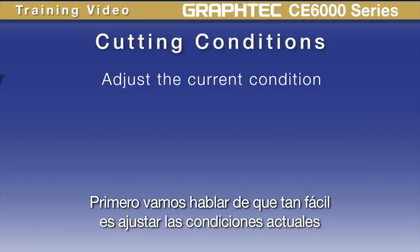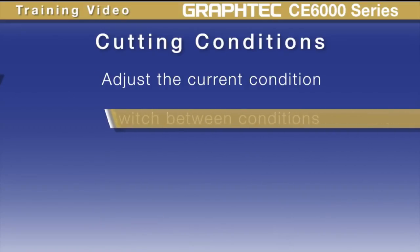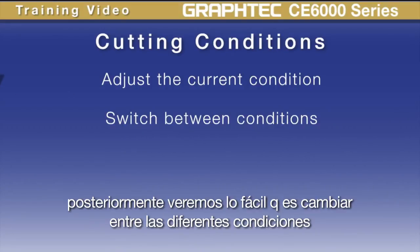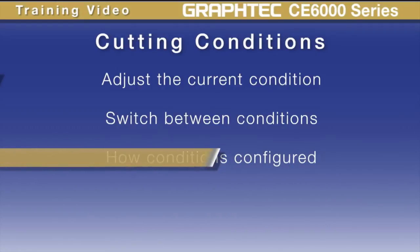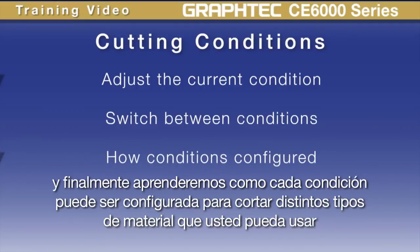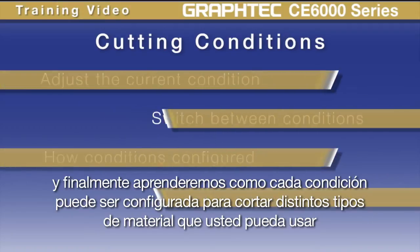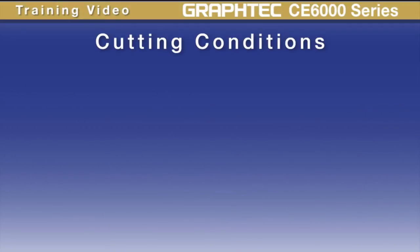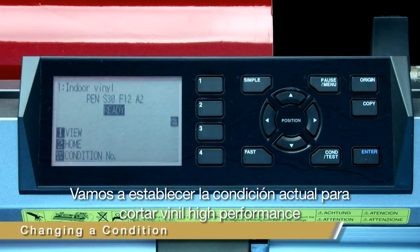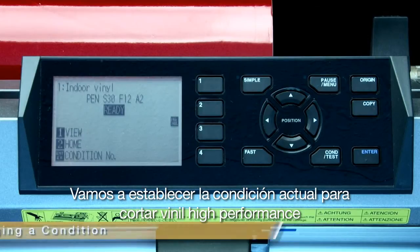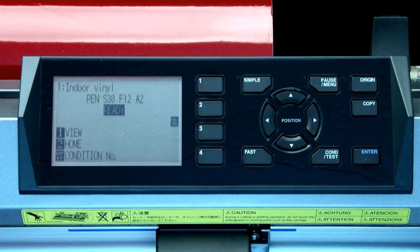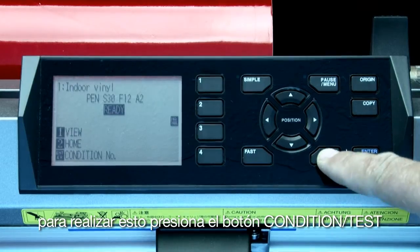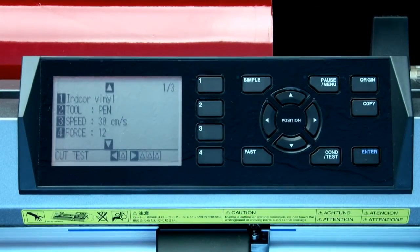First we'll cover how to easily adjust the current condition, then we'll cover how to easily switch between conditions, and finally we'll show how each condition can be configured to cut the different types of media you may be using. Let's set up this current condition to cut through high-performance vinyl. To accomplish this, press the condition test key.